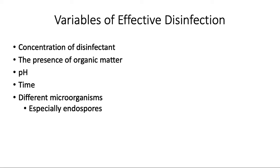pH is another factor — some agents are sensitive to the pH of the environment. Time is also important, and it will often depend on temperature: the colder the temperature, the longer you need to keep those disinfectants working. Finally, the type of microorganism matters — some microbes are more sensitive or more resistant than others. In particular, endospores are very hard to kill, so in the case of endospores you will need longer times or stronger agents at higher concentrations. This is the end of the Unit 6 mini-lecture for BIO 193A.